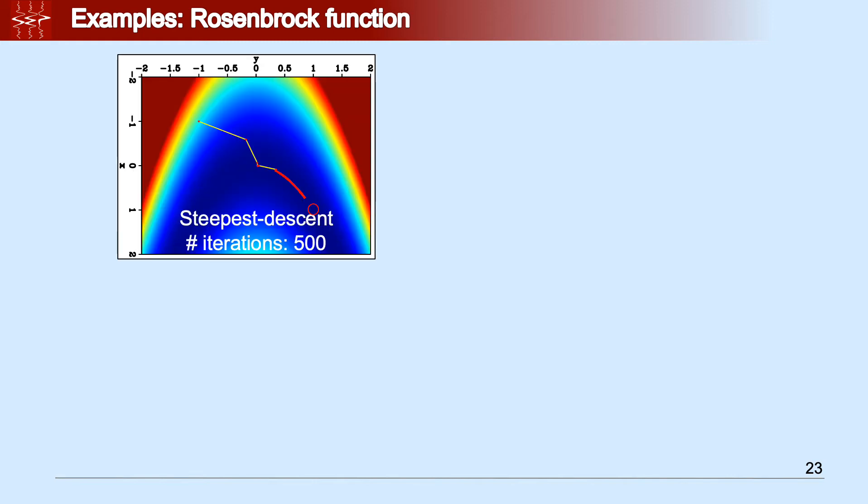In fact, if we compared the application of the various objective function minimizers, we can see the steepest descent, after 500 iterations, converges to the trivial valley. However, it fails to find the minimum indicated by the red circle.